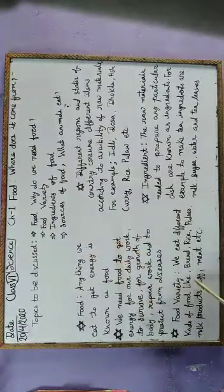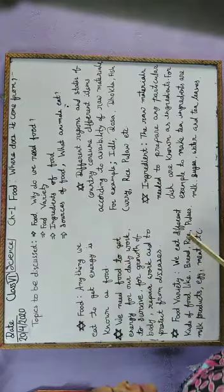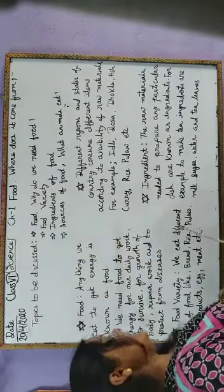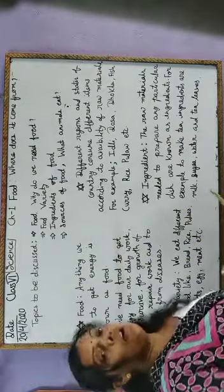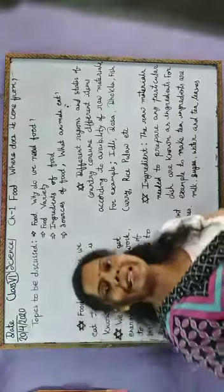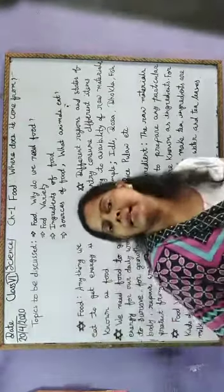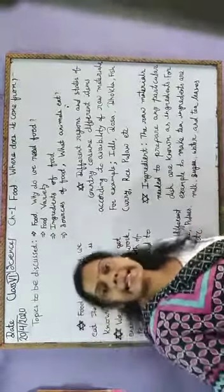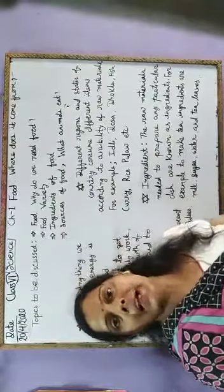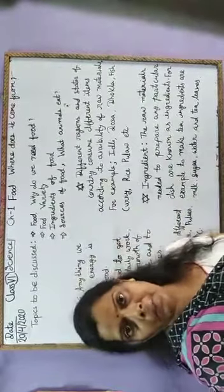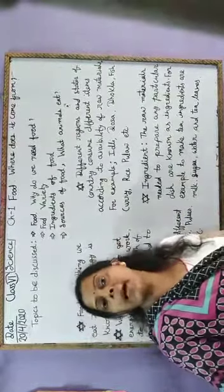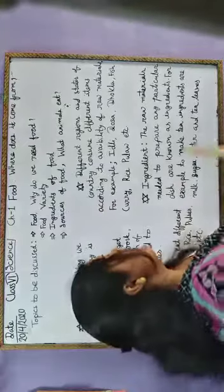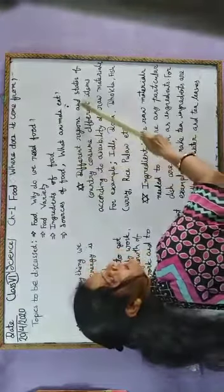We eat different kinds of food like bread, rice, pulses, milk products, egg, meat, etc. Also, different regions and different states of the country consume different types of food based on the availability of raw materials.